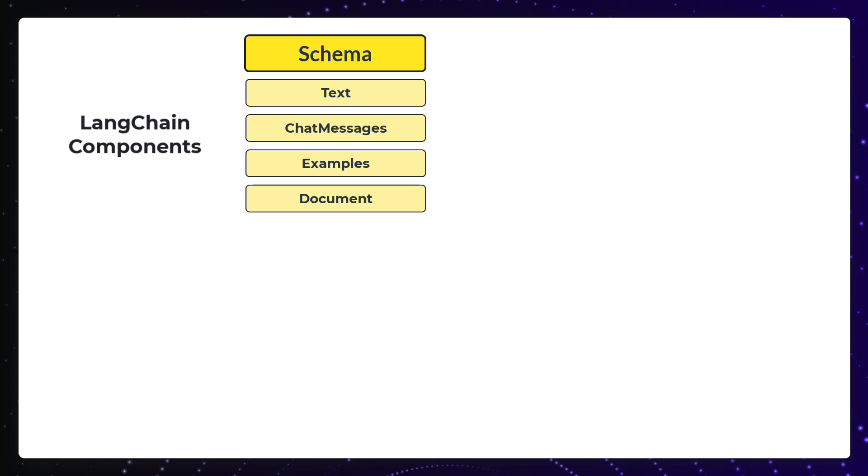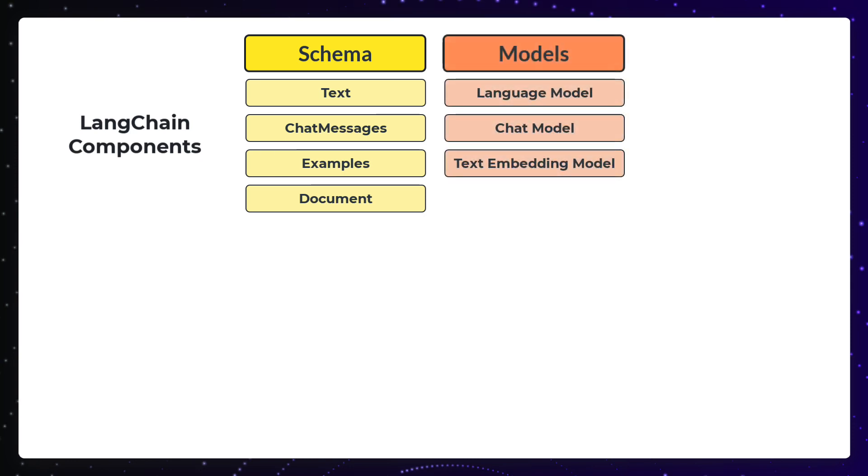Now we come to the main components starting with models. Different models have different type of input and outputs. LangChain is a wrapper for large language models or LLMs. These LLMs take text as input and return text as output. The more structured models are chat models. They take a list of messages as input and return one message as output.